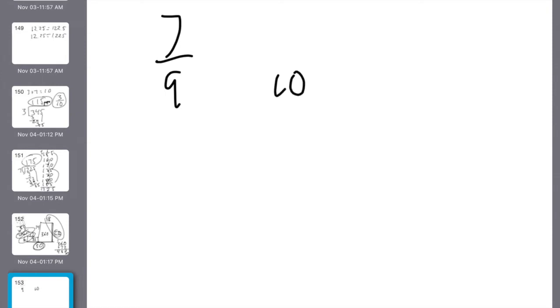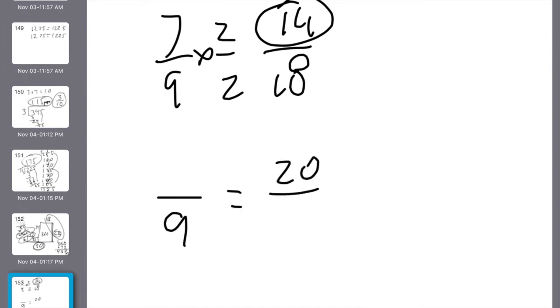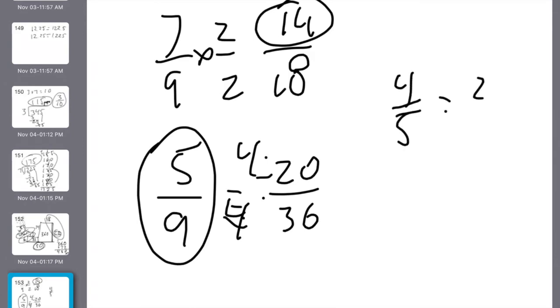Number 9 says complete each equivalent fractions. They gave me 7 9ths. And something to 18. I multiply by 2 on the bottom. Multiply by 2 on the top. It gives me 14. Next one is I don't know over 9 gives me 20 over 36. This was by the power of 4 here. And I'm going backwards, so we're really dividing. So I'll make that to 5 9ths. Last one they gave me is 4 5ths up to 24. That would be a times 6. So I times 6 on the bottom would give me 30. 24 over 30.